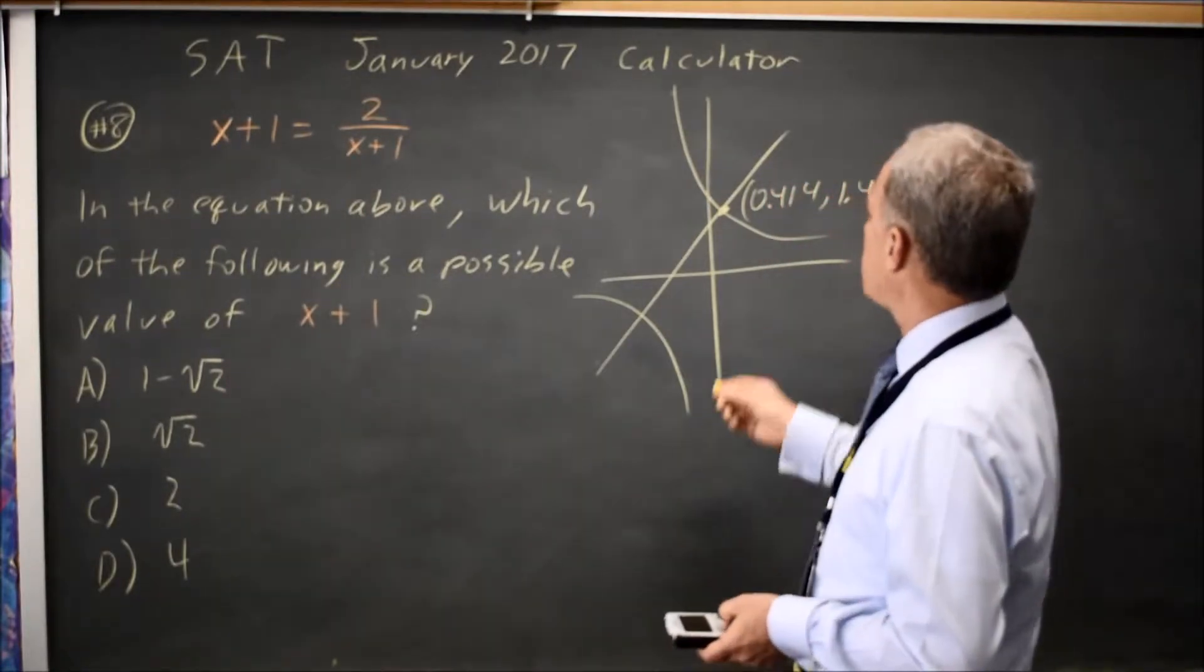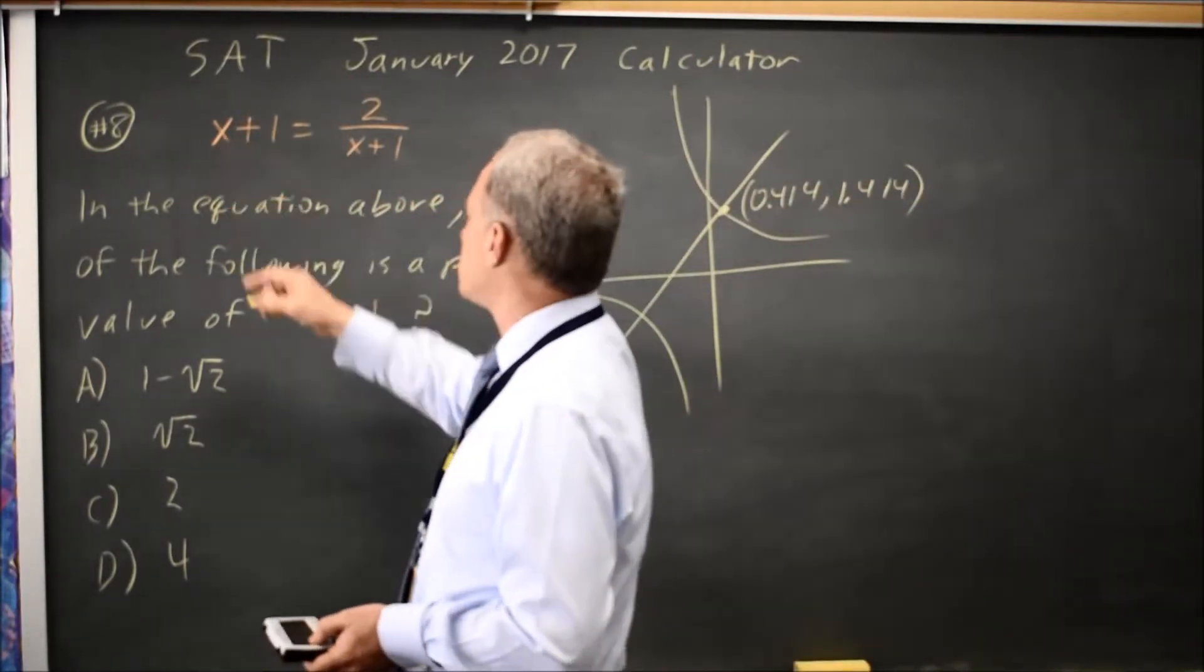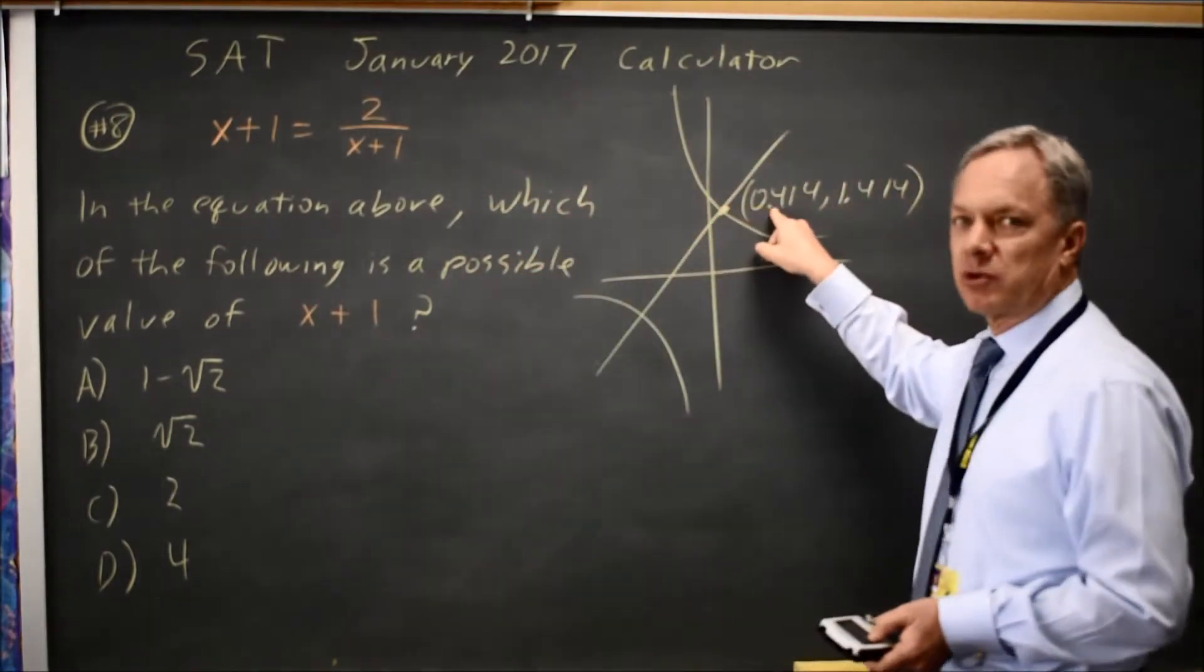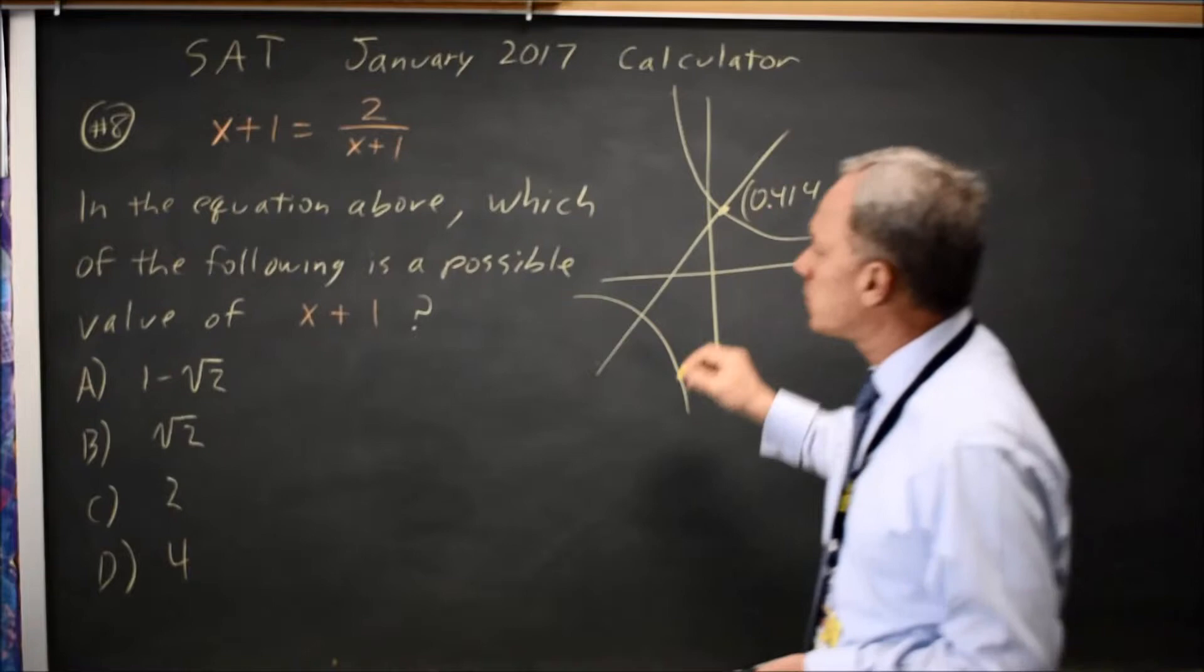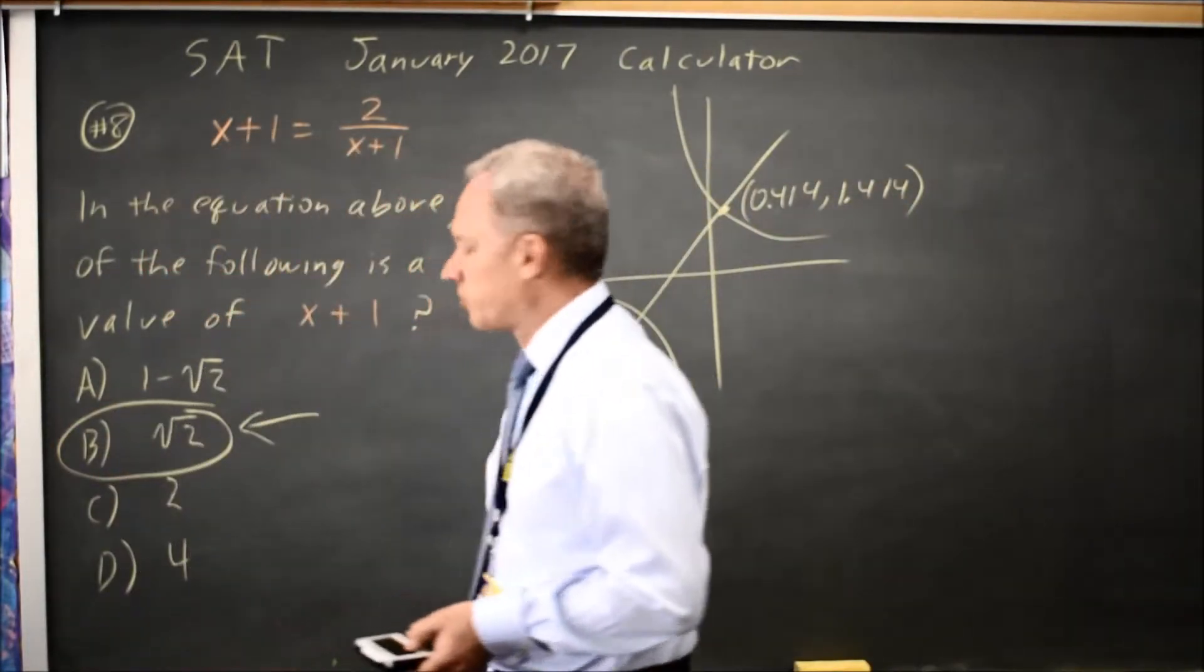And the x value here is the x value that satisfies the equation. And x plus 1 would be 0.414 plus 1 is 1.414, which is root 2. So choice B is a possible value.